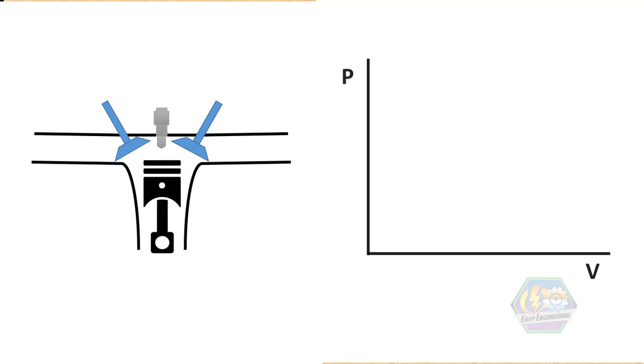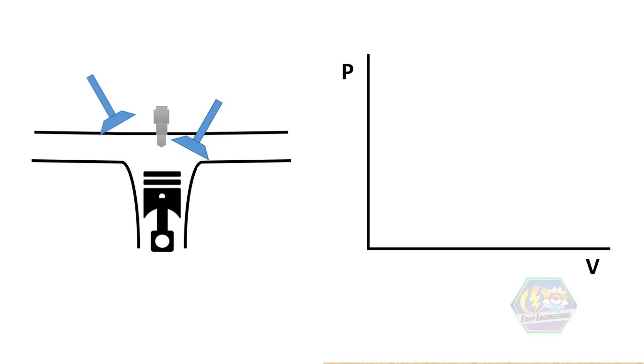So now, we are ready for our main event, the four strokes. And here, our intake valve is open, and this is what we call the intake stroke. Piston travels downward from top dead center to bottom dead center to draw the air and gasoline mixture into the cylinder. So as you can see, the volume increases.